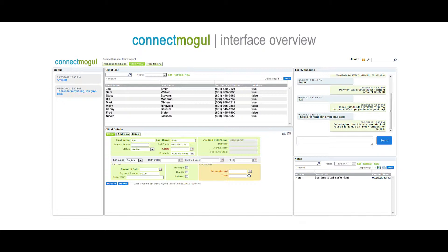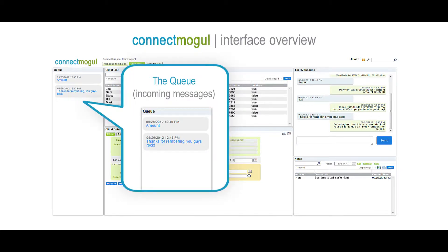The first thing we're going to talk about is the ConnectMogul interface. First up, the queue. This is where incoming messages appear. When you click on an incoming message, ConnectMogul will load the record of the person who sent the message and also remove the message from the queue.